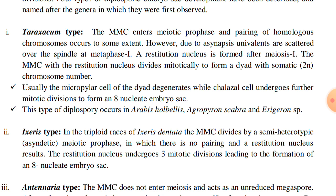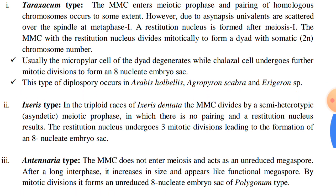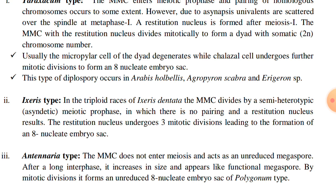After the restitution nucleus is formed following meiosis I, the dyad cells formed are having a diploid set of chromosomes. Usually the micropylar cell of the dyad degenerates, while the chalazal cell undergoes further mitotic divisions to form an 8-nucleate embryo sac. This type of diplospory occurs in Arabis holboellii, Agropyron scabrum, and Erigeron species.